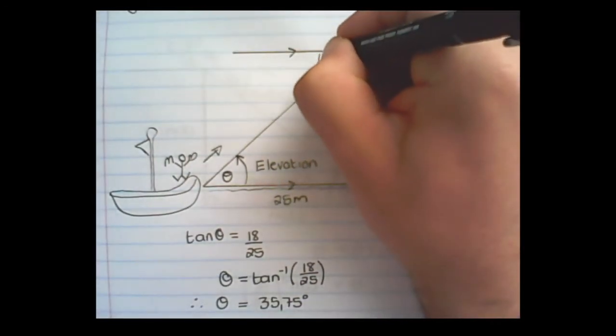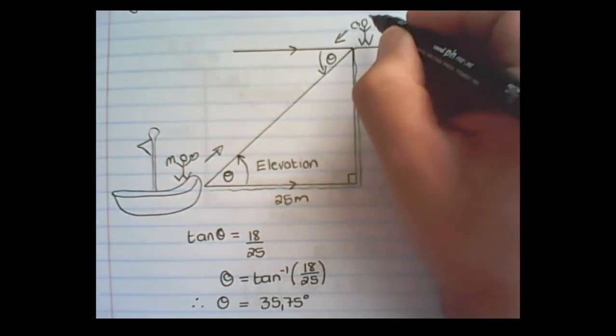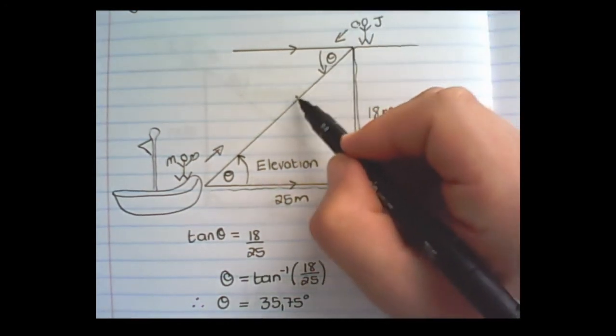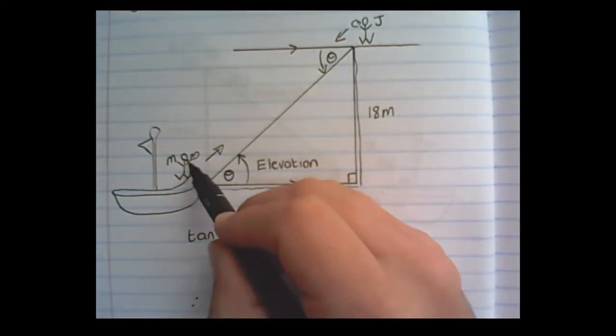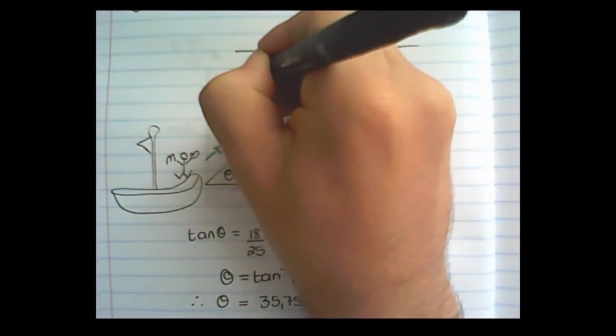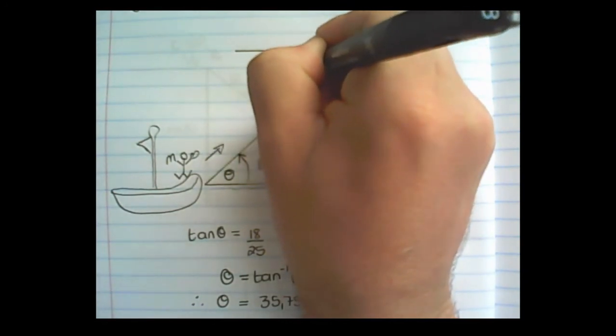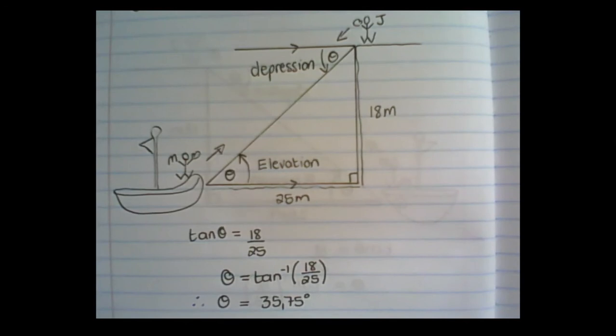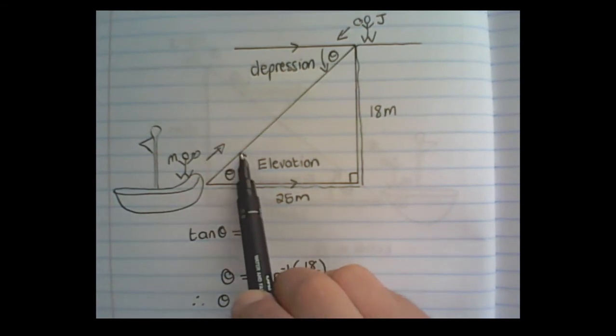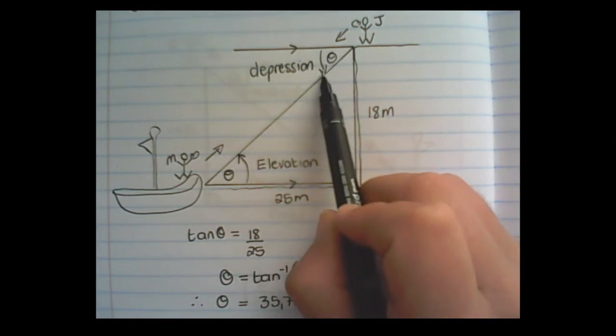But this angle can also be described as the angle at which John is looking or waving down at Mark. And because he is looking down or waving down, it is called an angle of depression. And that in a nutshell is what the angle of elevation and depression is. Elevation is an angle that goes upwards and an angle of depression is an angle that goes downwards.